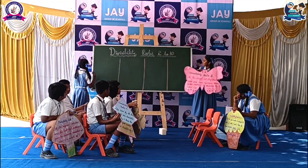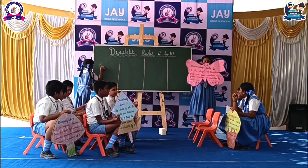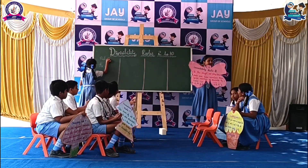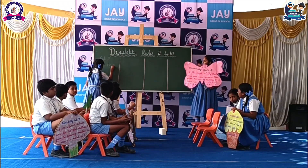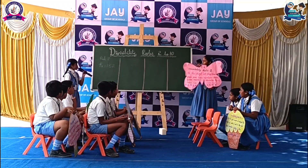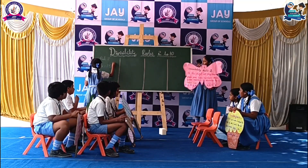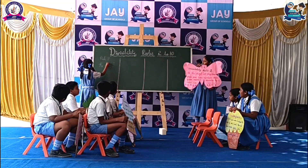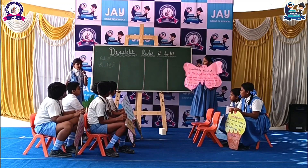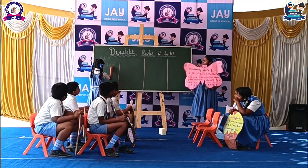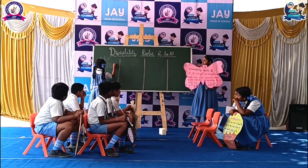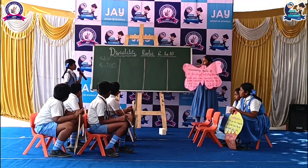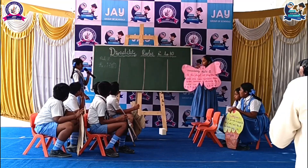Let's see one example. I am going to write the place value. 1's, 10's, 100's. What digit is in the one's place? It's 2. The number 2 is an even number. That's why 152 is divisible by 2.